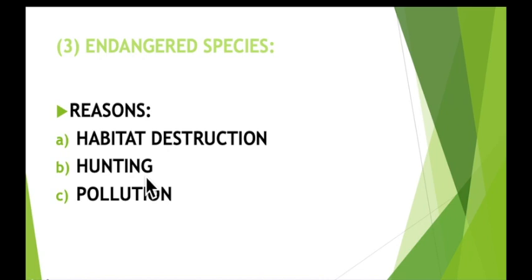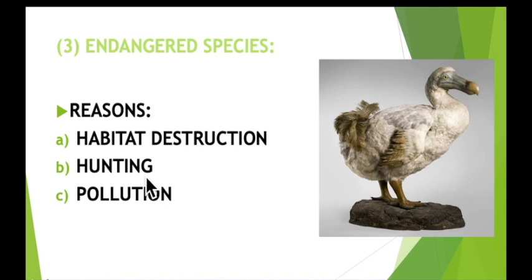Hunting: humans have always hunted animals for food, but sometimes hunting is so severe that it can destroy an entire species. A well-known example of a species that became extinct through hunting is the dodo — a giant flightless pigeon that used to live on Mauritius. It was destroyed by humans in the late 17th century, when its eggs were eaten and adults were killed.